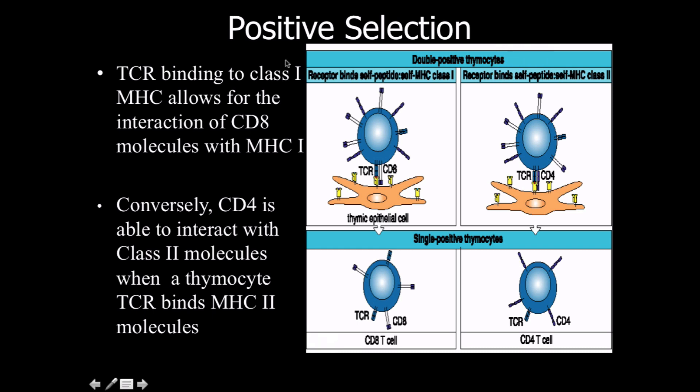The T cell receptor binds to MHC class 1, which allows interaction for the CD8 molecule with MHC class 1. And similarly, CD4 works with MHC class 2.